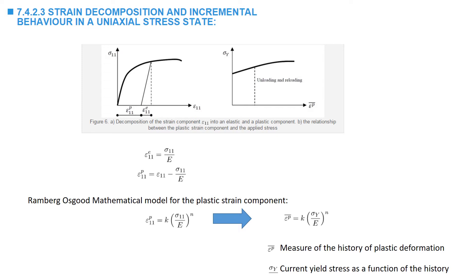There are many mathematical models that can be used to describe the curve of the yield stress versus plastic strain or versus equivalent plastic strain. The most ubiquitously used model is the Ramberg-Osgood mathematical model, which assumes the curve follows a power law in which the plastic strain is equal to a constant k multiplied by sigma_11 over E, raised to the power n, where k and n are material constants similar to Young's modulus.